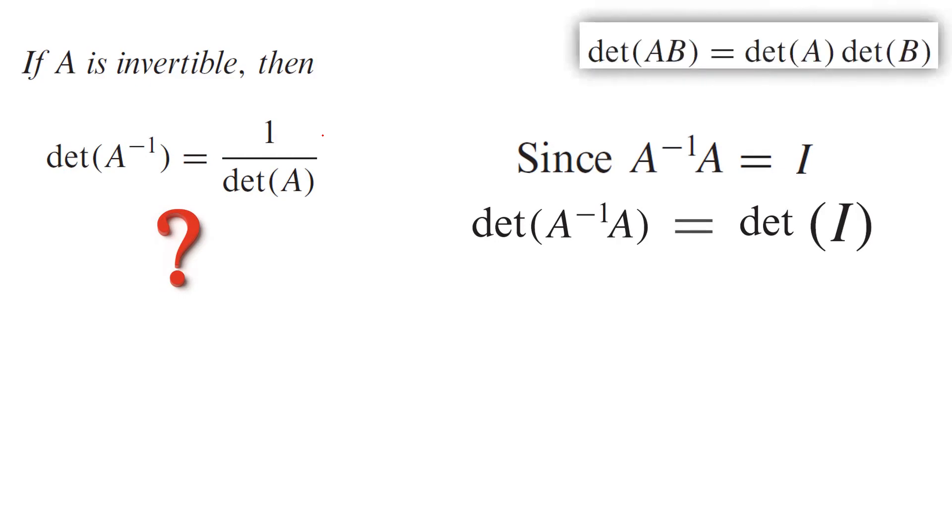We proved that the determinant of A times B is the determinant of A times the determinant of B. So since you have two matrices, inverse of A times A, you have the exact same thing here. You can write it as the determinant of inverse of A multiplied by the determinant of A.